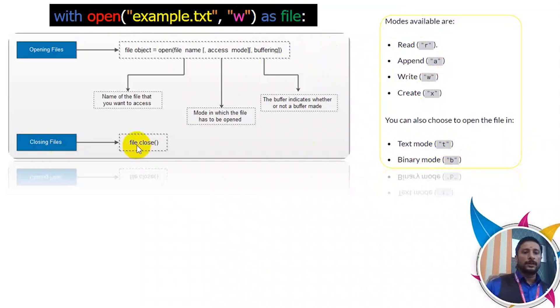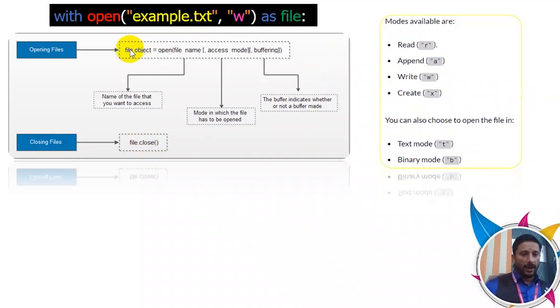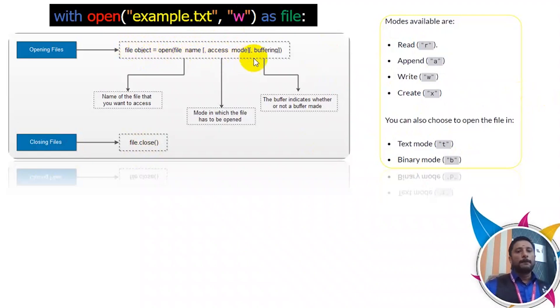To open a file, the syntax is: object_name = open(file_name, access_mode, buffering). You specify the filename and the access mode you want to use.